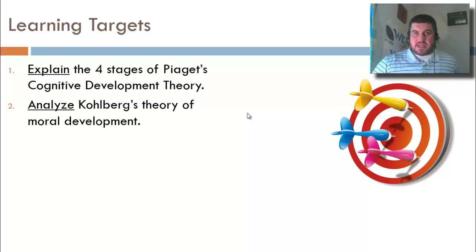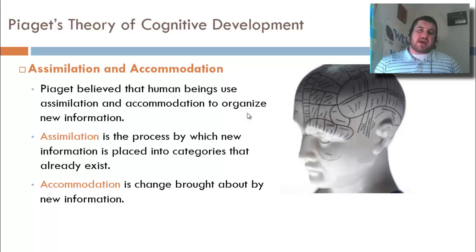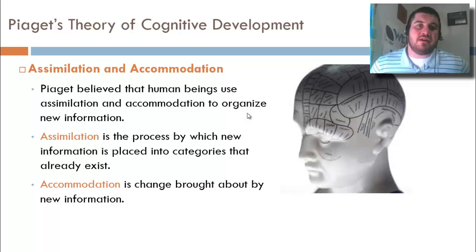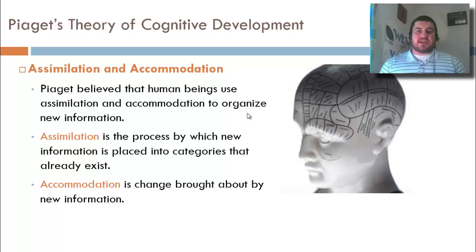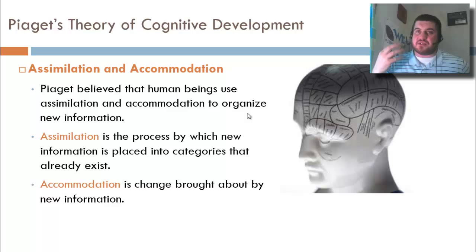First, we need to talk about what people are doing when they piece together the world. There are two processes: assimilation and accommodation. Piaget thought we use these to organize new information. Assimilation is the process by which new information is placed into categories that already exist, and accommodation is a change in your mental hierarchy brought about by new information.